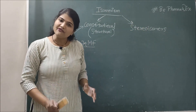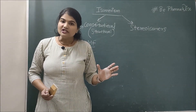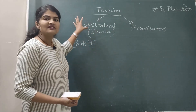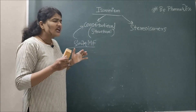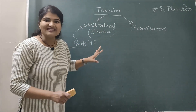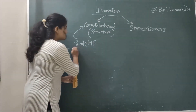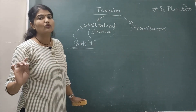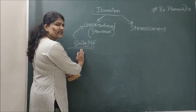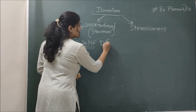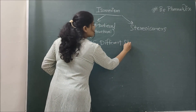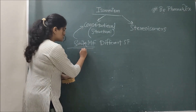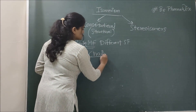In this video, I will be focusing on the first part, which is constitutional isomerism or structural isomerism. Structural isomers have similar molecular formula but different arrangement of atoms within the molecule without reference to space — in simple words, similar molecular formula but different structural formulae. Based on this, they are divided into five types.